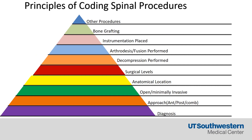When I think about coding, this is the pyramid that I think about. What's the diagnosis? What's the approach — was it minimally invasive or was it open? What's the anatomical location? What levels were involved? Were decompressions or arthrodesis performed? What instrumentation was used? What types of grafting and other procedures? Most of this video will be aimed at microdiscectomies; however, this is the general algorithm I use when coding for procedures.